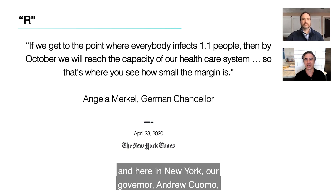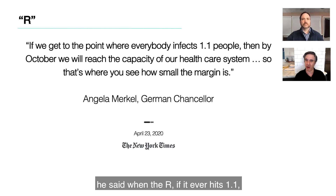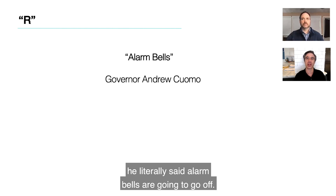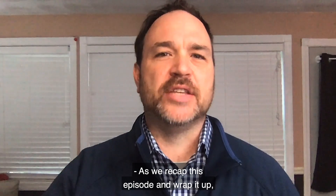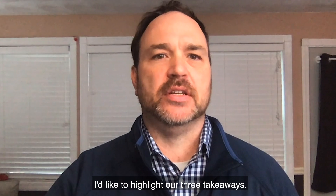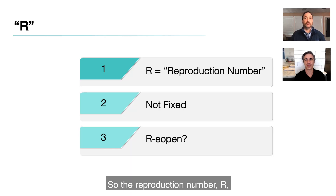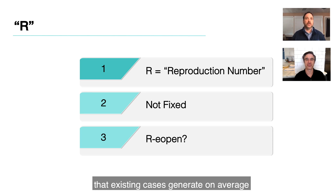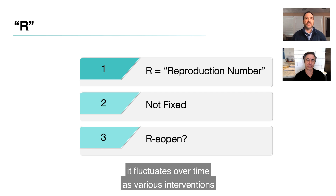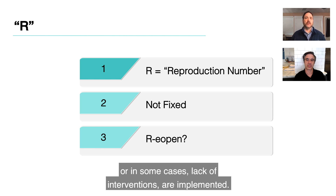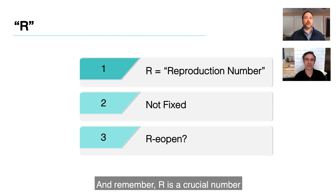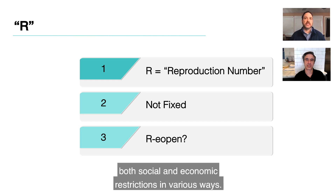Here in New York, Governor Andrew Cuomo said that as the state plans and experiences reopening, if R ever hits 1.1, he literally said alarm bells are going to go off. As we recap this episode, here are three takeaways: the reproduction number R is the number of new cases that existing cases generate on average while people are infectious; the R value is not fixed — it fluctuates over time as various interventions, or lack thereof, are implemented; and R is a crucial number that countries and states are looking at when thinking of loosening social and economic restrictions.